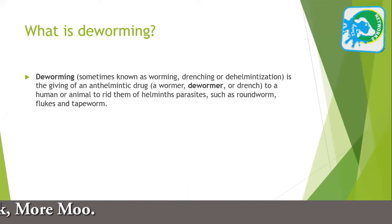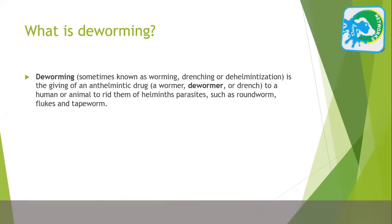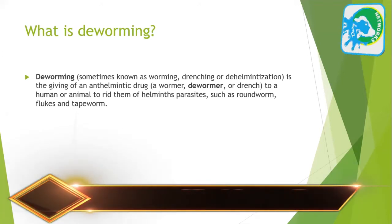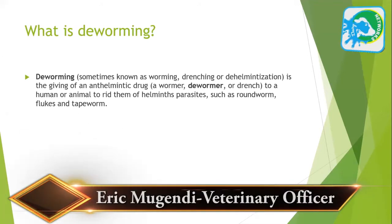De-worming is the giving of an anti-helminthic drug, or a wormer or de-wormer, to a human or animal to rid them of helminths or parasites such as roundworms, flukes, and tapeworms. That activity of giving the animal those drugs to counter the effects of those parasites is what we call de-worming.